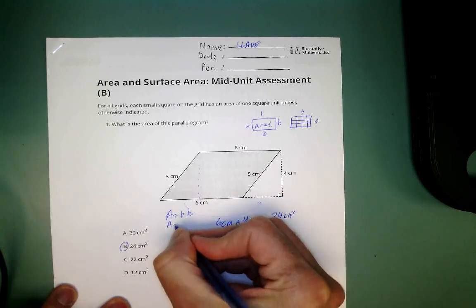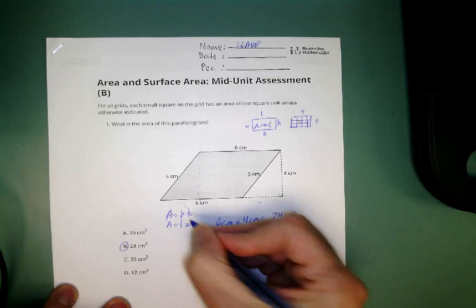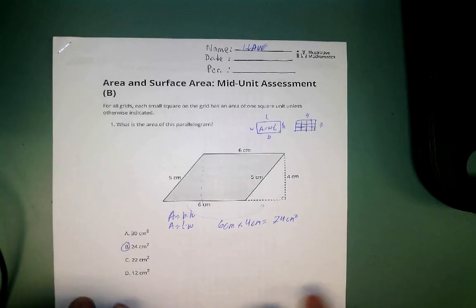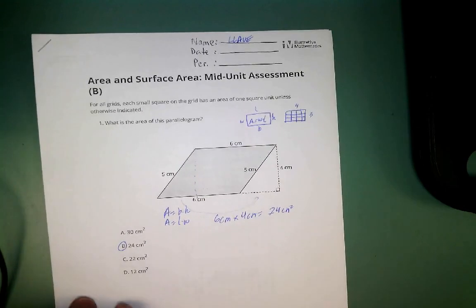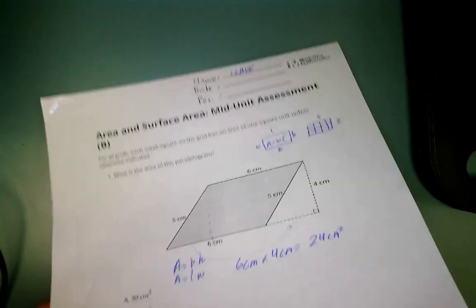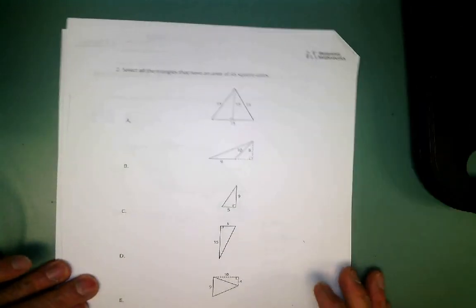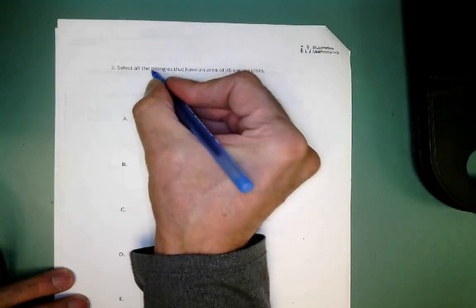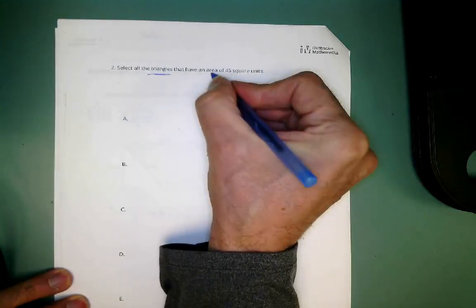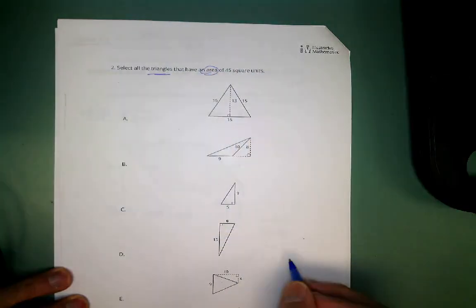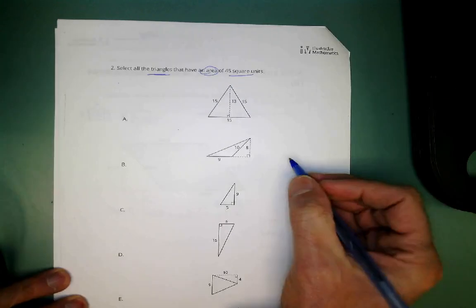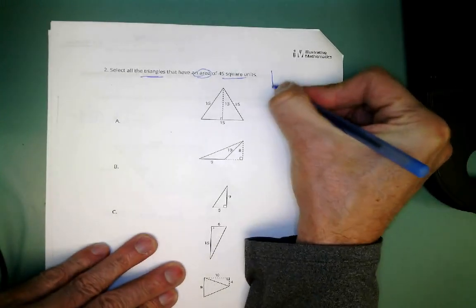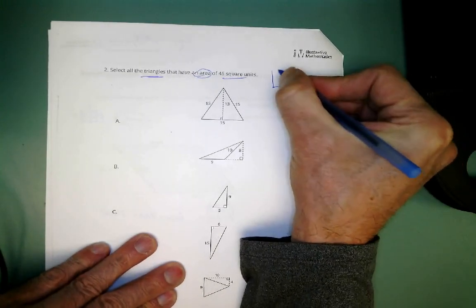Some kids like to write the formula. I prefer base times height over length times width because it leads you to parallelograms — and rectangles are parallelograms — but it will also help you with triangles later. Now on page two we're getting the area of triangles, specifically problem 45.